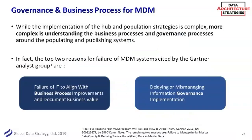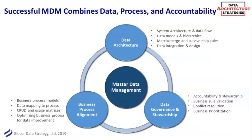The other piece is governance and business process. Gartner did a report a while back identifying top reasons for failure of a data warehouse — failure to align with business process and not having the right governance. That has nothing to do with the technology, whether it's hub-and-spoke or a federated model, or your matching rules and algorithms. That's often not why master data fails; it's often the so-called soft skills that are critically important with MDM. Successful MDM is the sweet spot integration between data architecture, data governance and stewardship, and business process alignment.